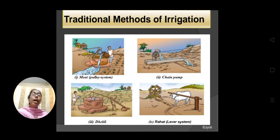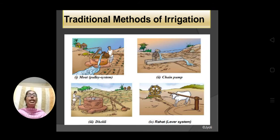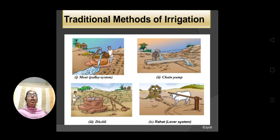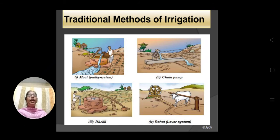The next method is Rahat, the lever system. In this system, farmers take the help of a bull. A beam is placed on the neck of the bull, and when the bull moves around the central reference point, underground water is drawn. There is a wheel with many containers attached — the containers collect the water, pull it out, and pour it into the nearby field.